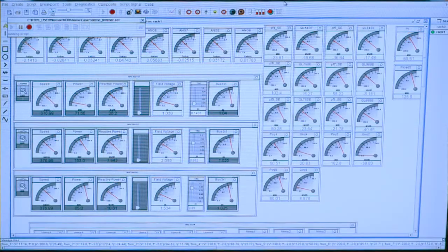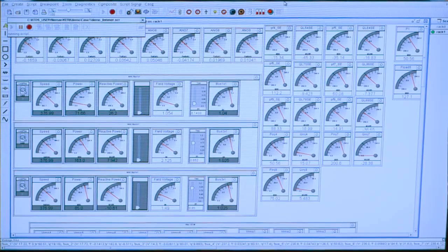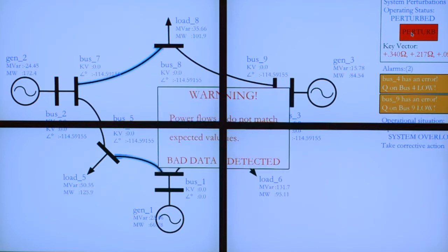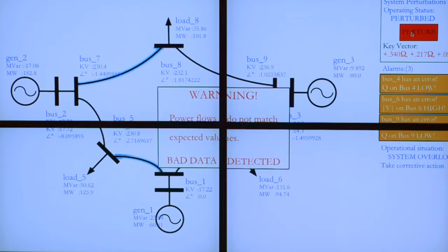And we see that our expected values don't match, or the actual values aren't sufficiently close to what we expected to see. And so a warning is set off. And at this point, the operator would investigate the source of the bad data.